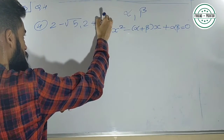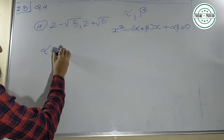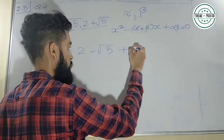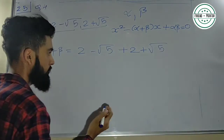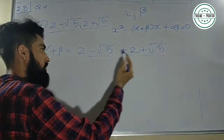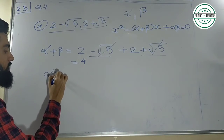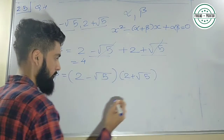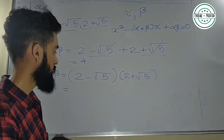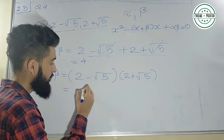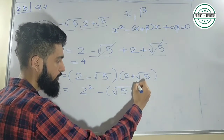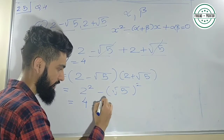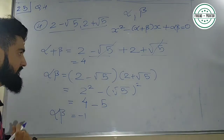Fourth: roots are 2 − √5 and 2 + √5. Alpha + beta = (2 − √5) + (2 + √5) — yeh aur yeh opposite sign isle cancel. 2 + 2 = 4. Alpha × beta = (2 − √5)(2 + √5) — yeh A minus B times A plus B hai, so A² − B² = 4 − 5 = minus 1. So alpha × beta = minus 1. This is your quadratic equation with these roots — x² − 4x − 1 = 0.